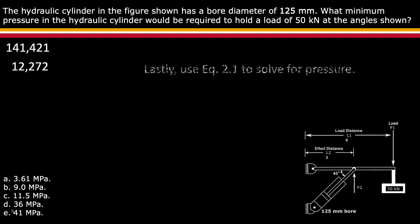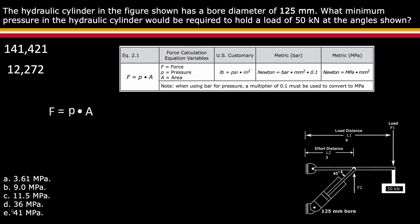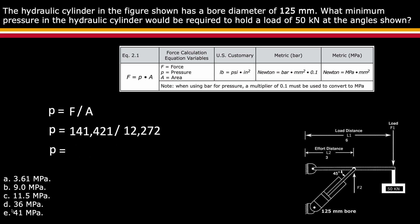Now calculate the pressure using Pascal's law, equation 2.1. Since the force and the area are known, rearrange the equation so that pressure equals force divided by area. The force of 141,421 newtons divided by the area of 12,272 square millimeters gives a pressure equal to 11.52 megapascals.